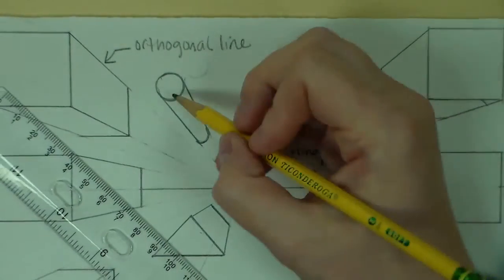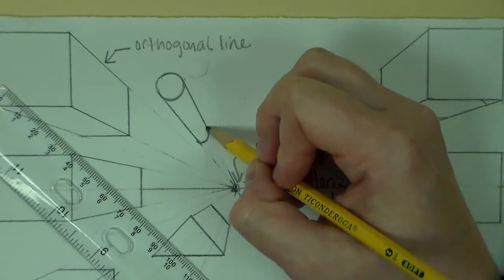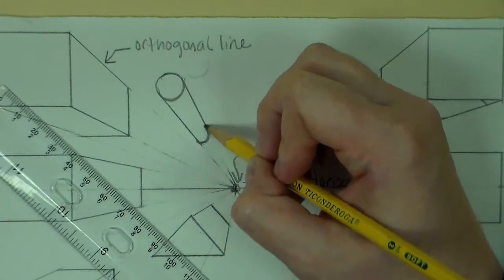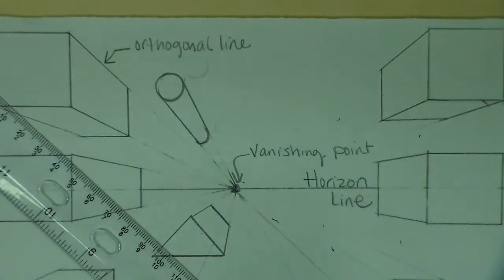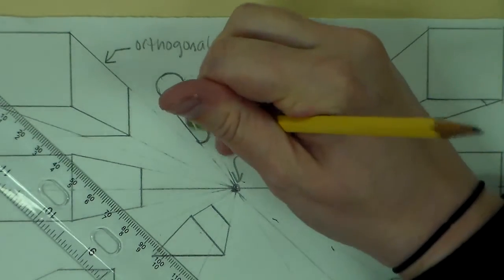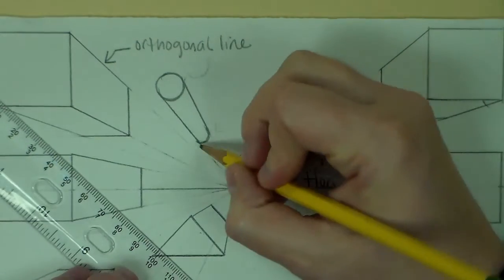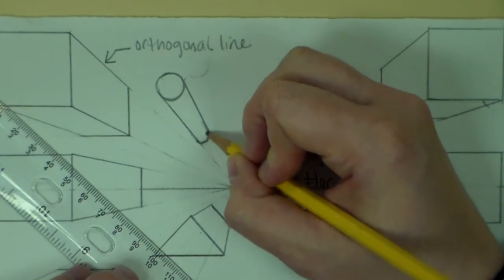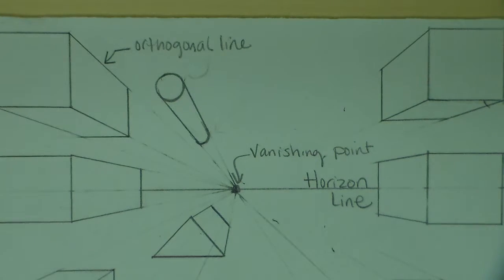And what happens there is it kind of copies the shape we see here. Over here feels like it's the other end of that object actually getting smaller. So that should start to look like a cylinder.